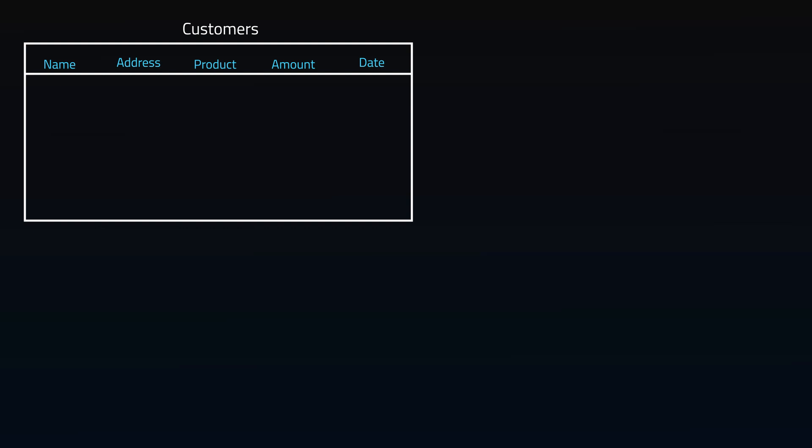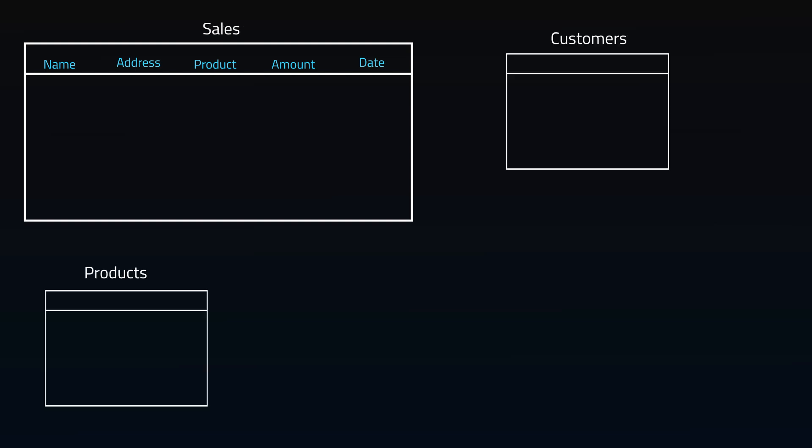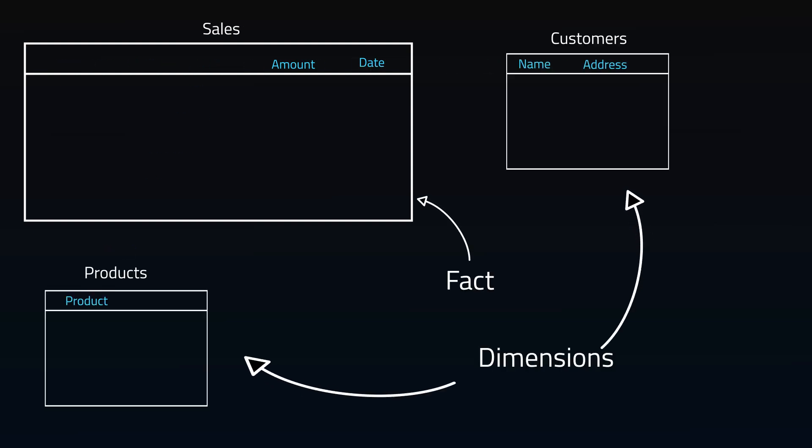The dimensional model is more in the middle. It's somewhat normalized into star schemas. Stars are made up of dimensions, which generally contain reference data, and facts, which are the measurements. For example, a fact table might be sales, where the supporting dimensions are customer, product, and date, which are references for the sales transaction.